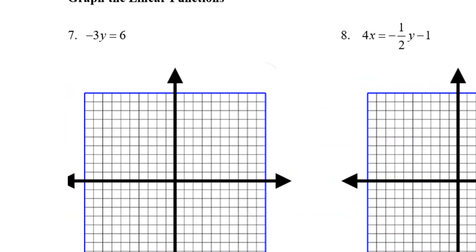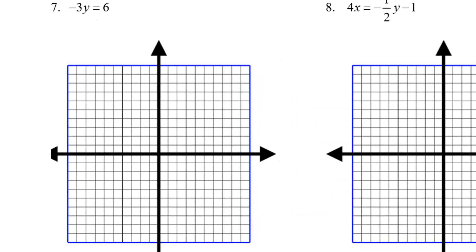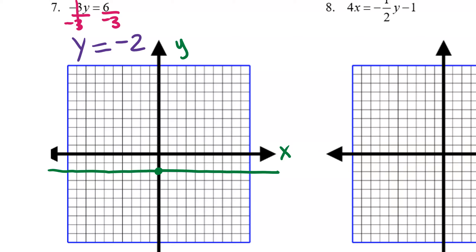Number seven is a graphing problem. I need to get this into slope-intercept form, so I'll divide by -3 on each side. When I divide, 6 ÷ (-3) = -2, and there's no x term remaining — this is a special line: y = -2. On the graph, I find -2 on the y-axis and draw a horizontal line through it. Everywhere along that line, y equals -2. Note: y = something gives a horizontal line; x = something gives a vertical line.